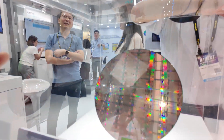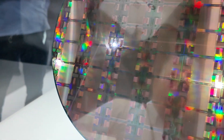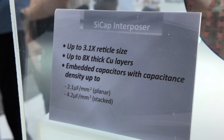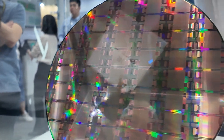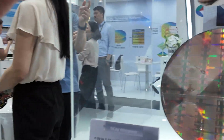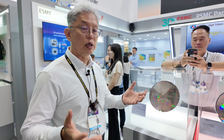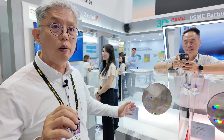A quite unique point for the interposer is that we have the embedded capacitor. That's very important because for high-speed signals, you need to cancel the noise. So we use the embedded capacitor to cancel or filter the noise. That's very important for GPU applications because this kind of chip requires high-speed signals and also a very stable power supply.